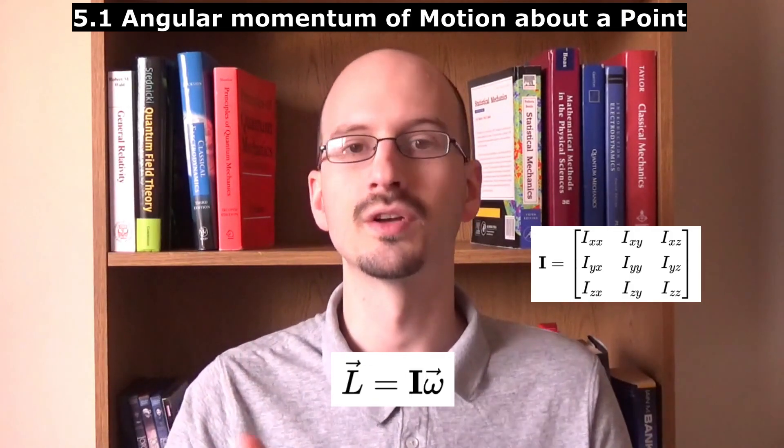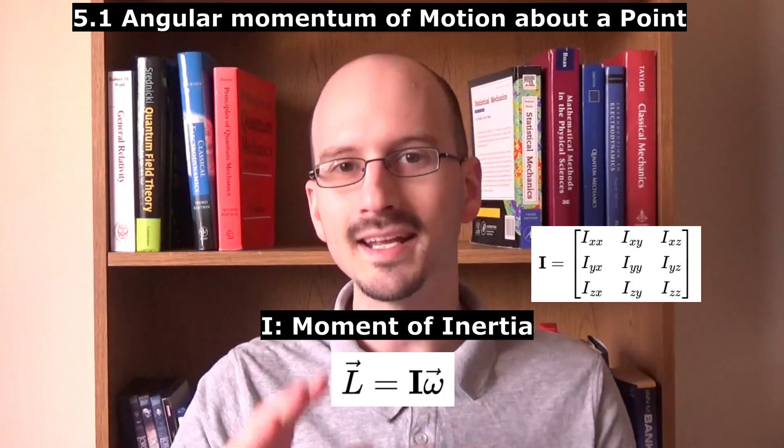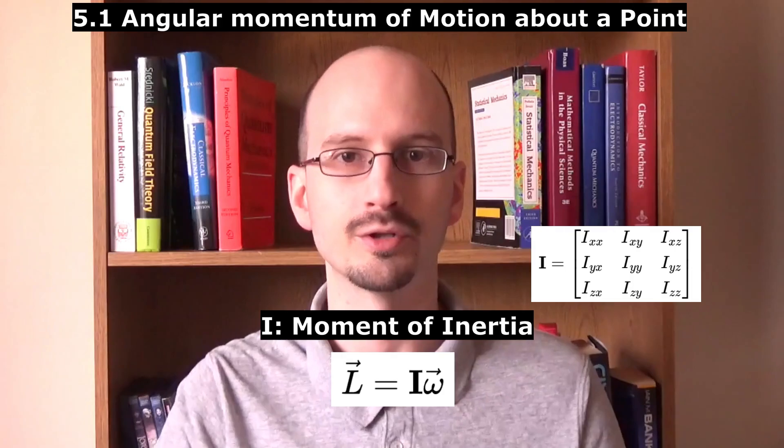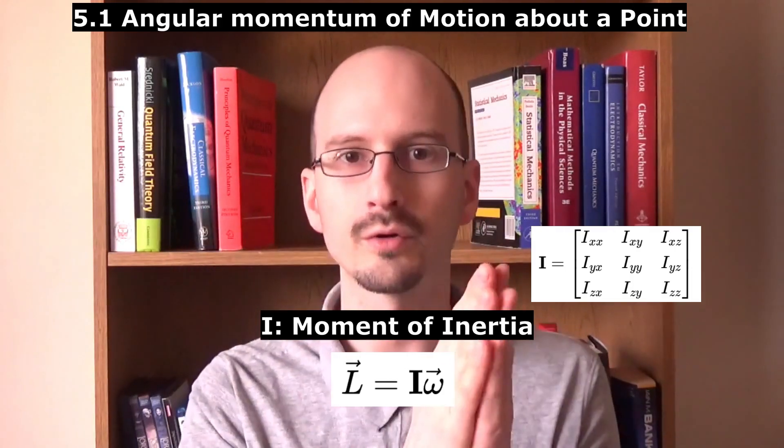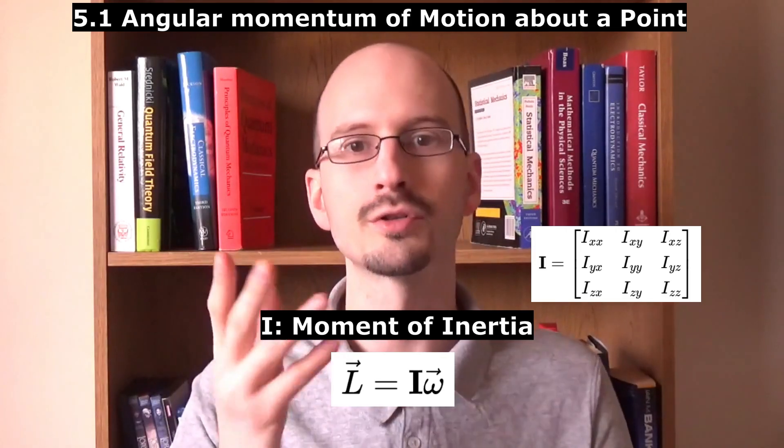Let's write out one term of that cross product. It has three terms, all multiplied by components of the angular velocity. We can simplify this by writing that extra stuff as I_xx, I_xy, and I_xz. The y and z equations for angular momentum look the same but cycled. These I's look like the components of a matrix operator, and we can rewrite the angular momentum equation so that when I operates on the angular velocity, we get angular momentum. I is called the moment of inertia, and it is to rotational motion what mass is to linear motion. The higher the moment of inertia, the greater the torque needed to start or stop an object rotating.